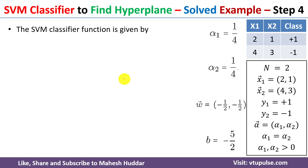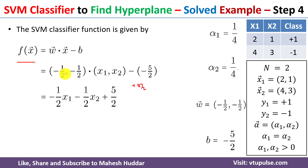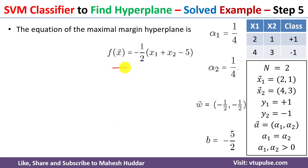We know the SVM classifier function: f of x vector equals weight vector multiplied by input vector minus bias. Substituting the calculated values, the weight vector is (minus 1/2, minus 1/2) and the bias is minus 5 by 2. The two minuses cancel, giving plus 5 by 2. Taking the dot product: minus 1/2 x1 plus minus 1/2 x2 plus 5/2. Multiplying through by 2 gives minus 1/2 times (x1 plus x2) minus 5.